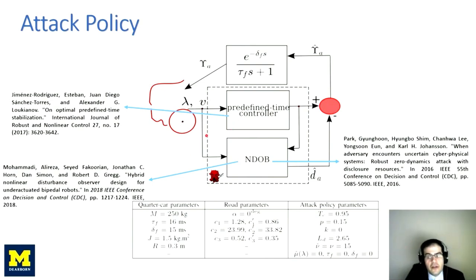Now, disturbance observers are very powerful tools for estimating the total effect of unknowns acting on a control system, and have been used in both bipedal robotics and also design of robust zero-dynamics attacks.